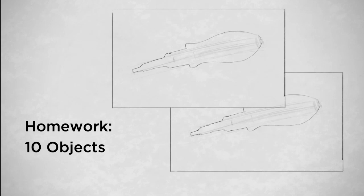The reason I only want you to do 10 is because these should take a while. This is not a speed assignment, because the idea is to be very careful and very specific. In the upcoming videos, we're going to talk more and more about shape and how to observe shape carefully. So for now, just try contour line drawing. Have fun!